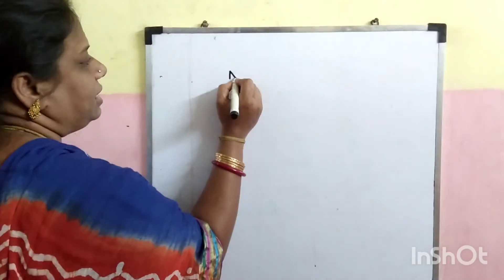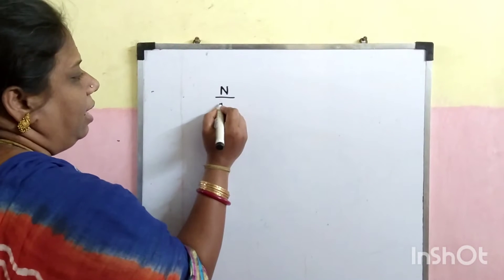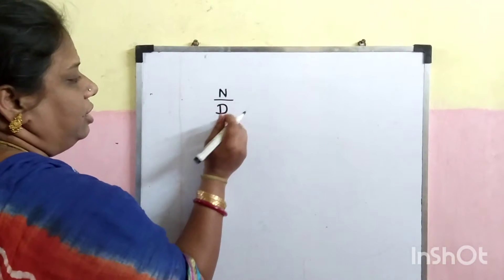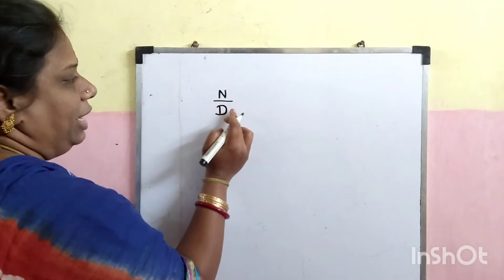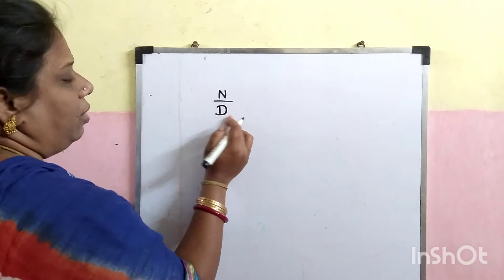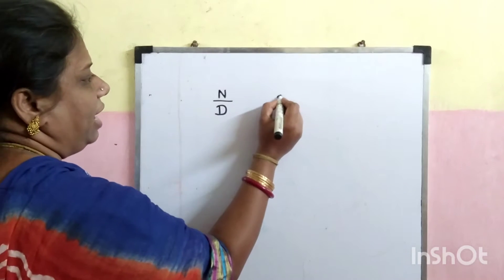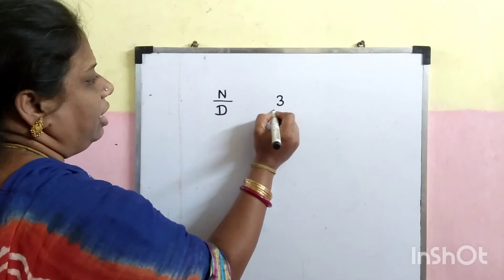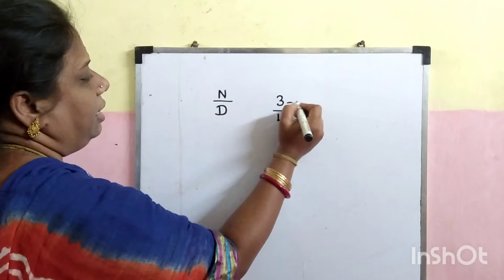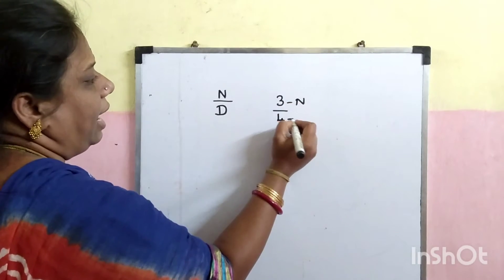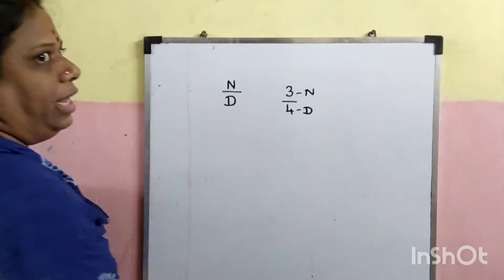A fraction is always represented by a numerator and denominator. Numerator is at the top and denominator is at the bottom. For example, if I have the number 3 by 4, then 3 is the numerator and 4 is the denominator.